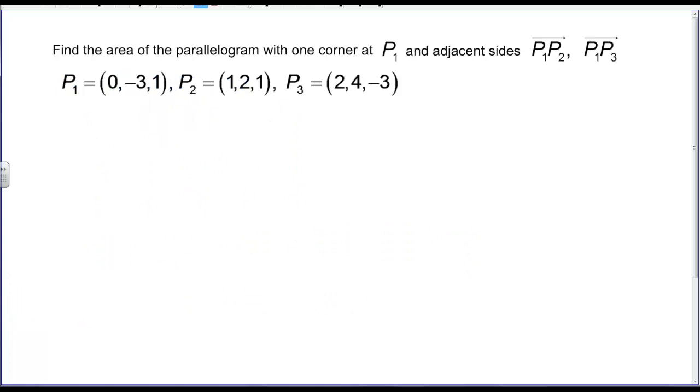So next we're going to find the area of this parallelogram, and we know that one corner is at P1, and there are adjacent sides of P1, P2, and P1, P3. Notice what I've given you is the coordinates of the vertices in 3D space, but I haven't found the actual vectors. So I need to find the actual vector P1, P2, and I do that by taking my tip minus tail. P2 is the tip, so I have 1 minus 0, 2 plus 3, and 1 minus 1, which is going to be equal to a 1, a 5, and a 0. And then I'm going to have P1, P3.